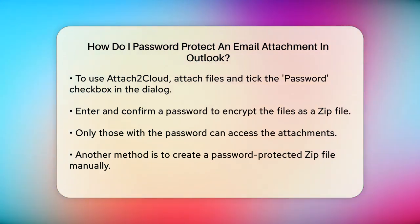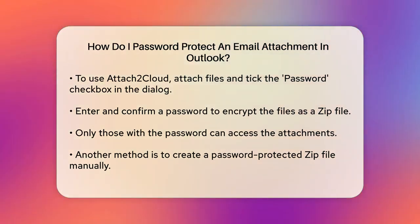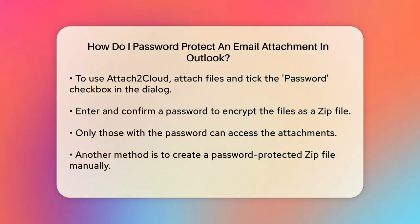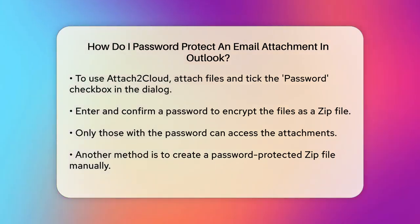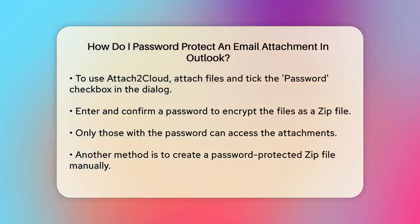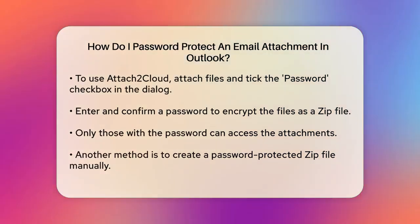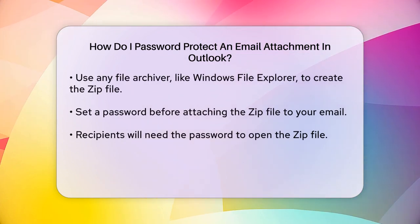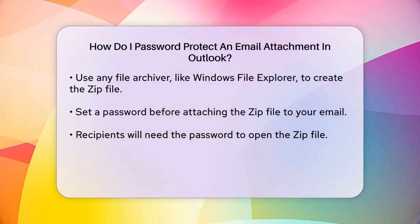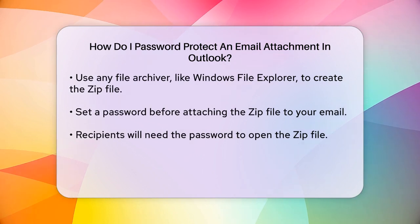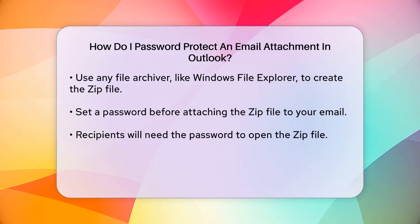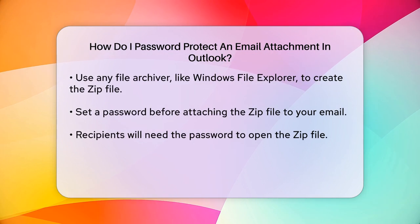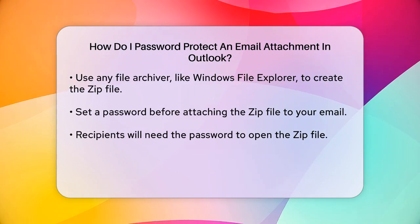Another approach is to manually create a password-protected zip file before attaching it to your email. You can do this using any file archiver that supports password protection, like Windows File Explorer. Simply select the files you want to attach, create a zip file, and set a password for it. Then attach this zip file to your email. When the recipient tries to open the zip file, they will be prompted to enter the password.